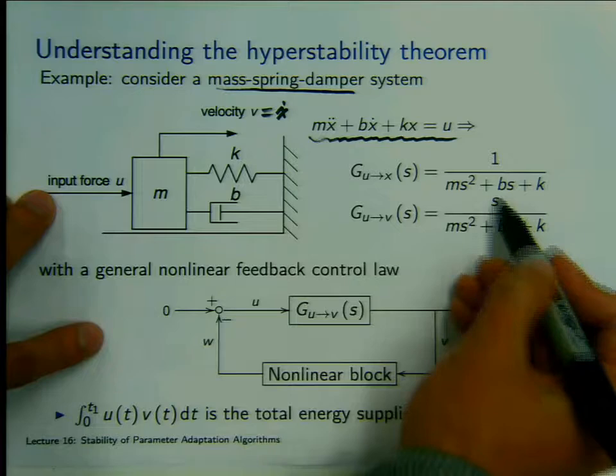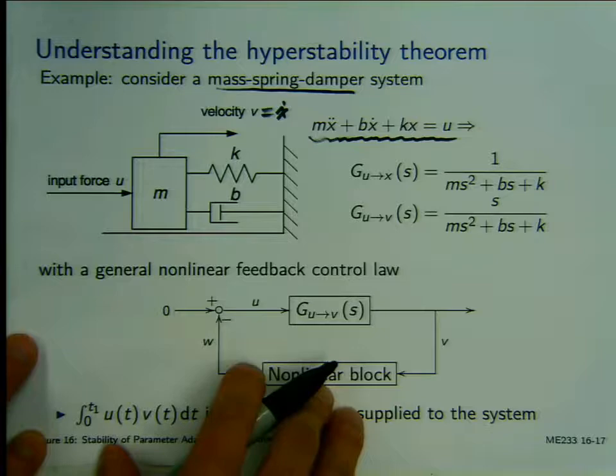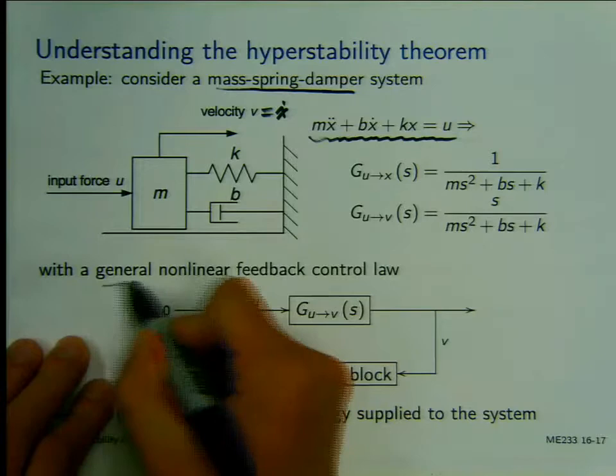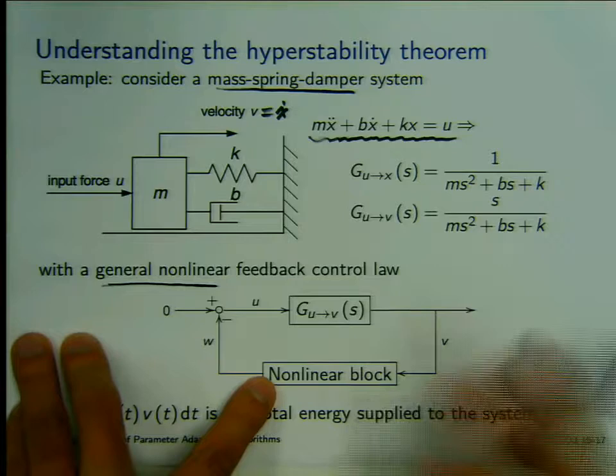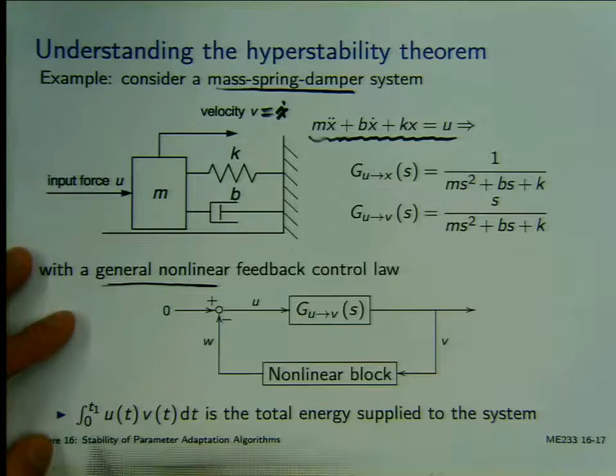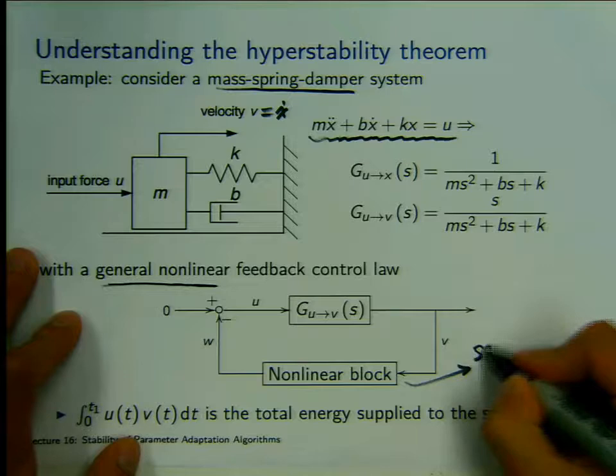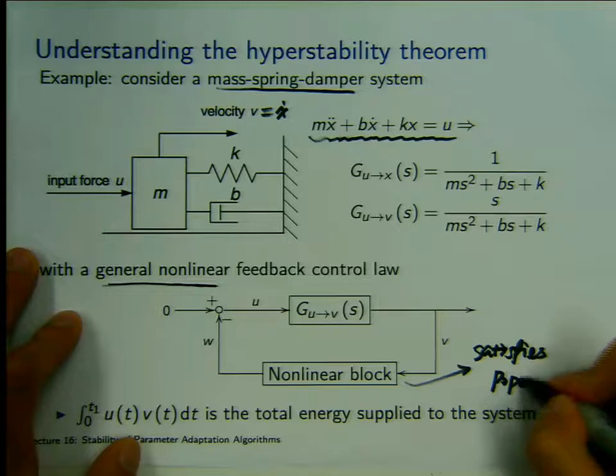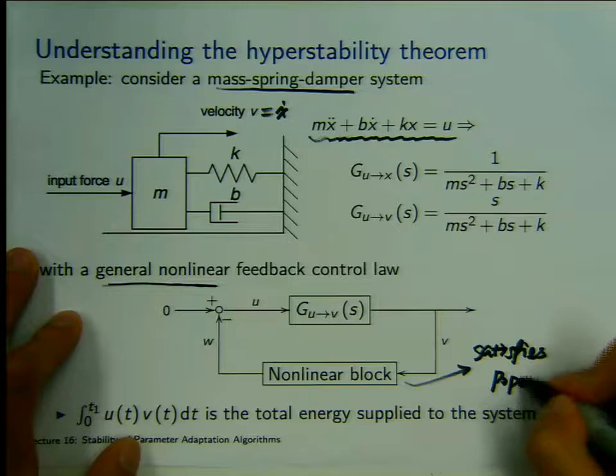We can obtain: mass times acceleration, plus damping times velocity, plus the spring force, equals the input force. Then we can derive the transfer function from the input to the output position, which is a second-order system. If we want to obtain the velocity, we just add the derivative on the numerator. So let's do one very general nonlinear design — put a nonlinear block here. I haven't specified what kind of form or structure it has, but I say the nonlinear block satisfies the Popov inequality.